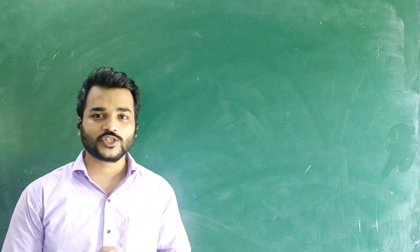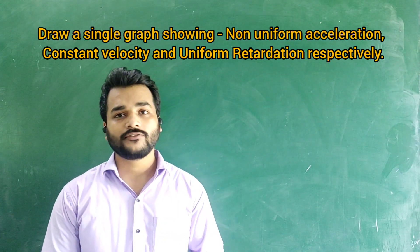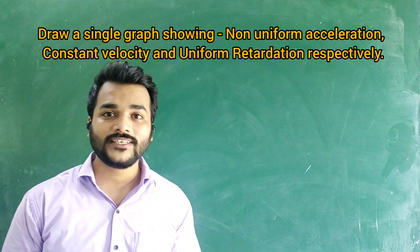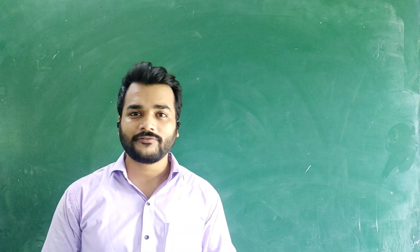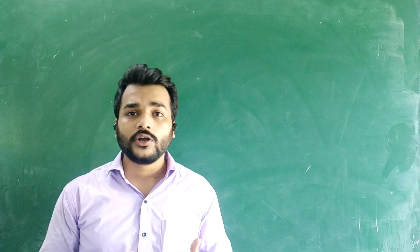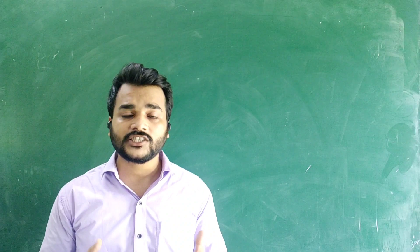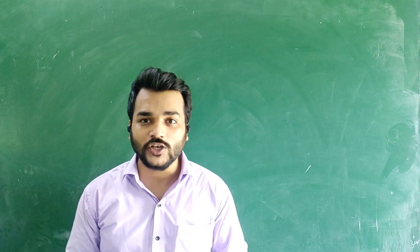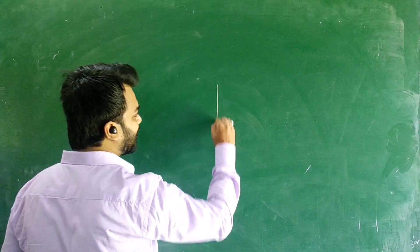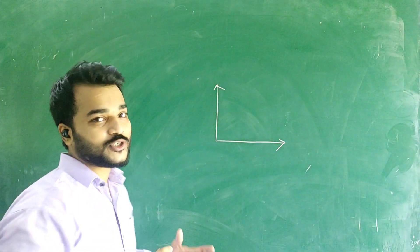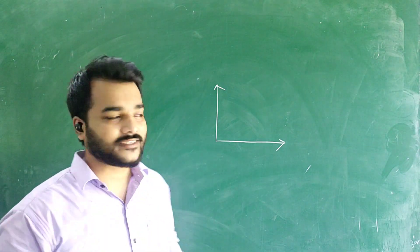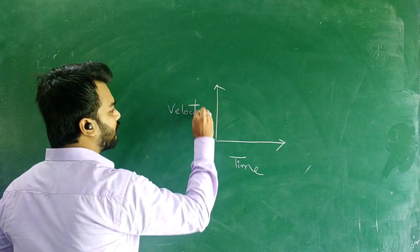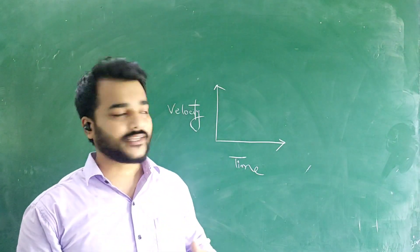Let's do the first question. It says: draw a single graph showing non-uniform acceleration, constant velocity and uniform retardation respectively — all three quantities in one single graph. If you remember the topic of graphs, you need to determine which type of graph gives the value of acceleration. We have to make a velocity-time graph. This is the velocity-time graph. Time will be on the x-axis and velocity on the y-axis.